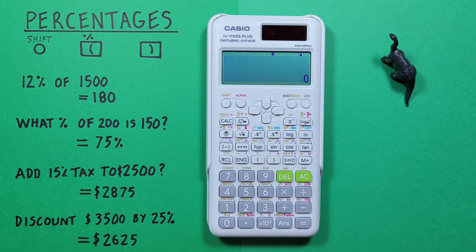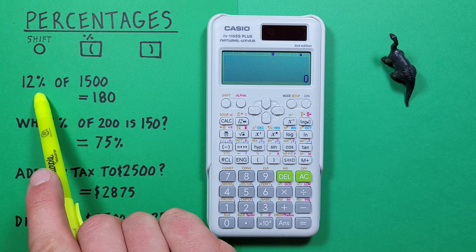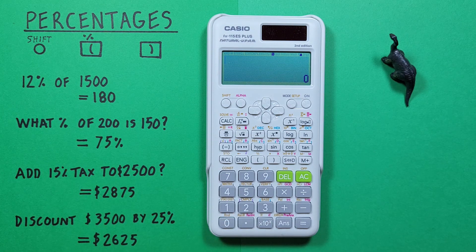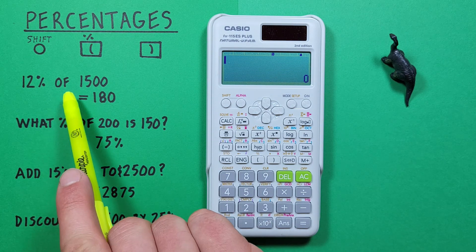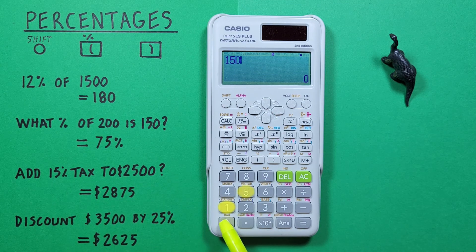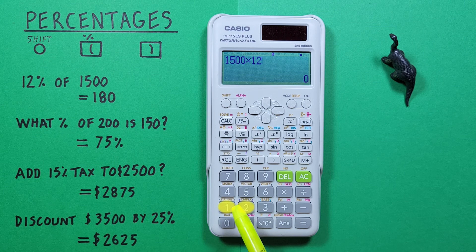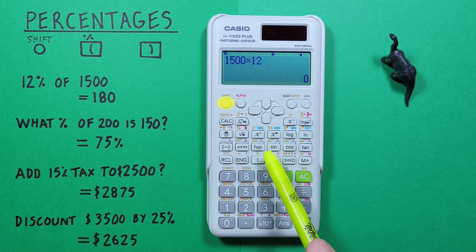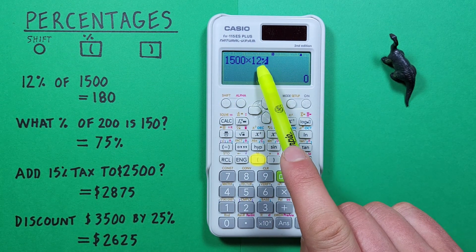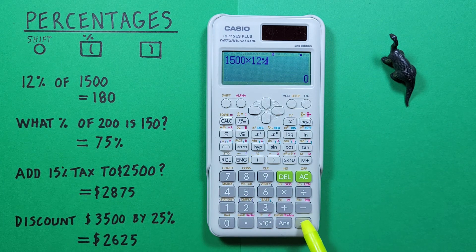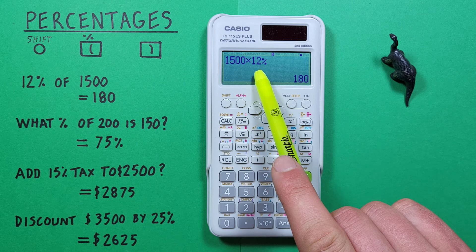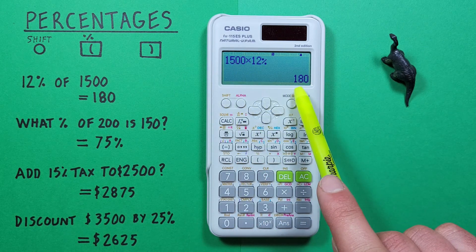To start, if we wanted to determine what 12% of 1500 was, first we would enter the 1500 and then press the multiplication key and then enter our 12, and then press shift left bracket for the percentage sign and press equals. We see 12% of 1500 is 180.